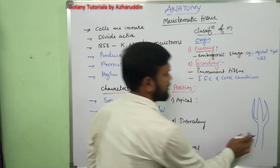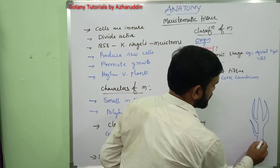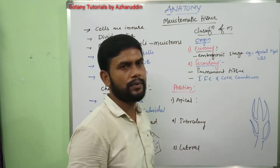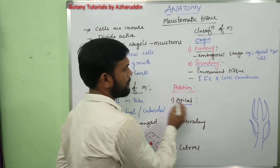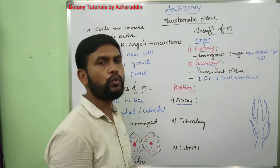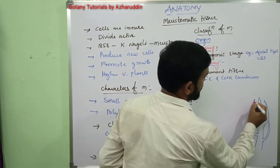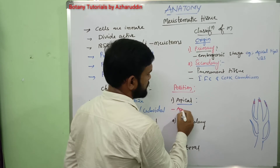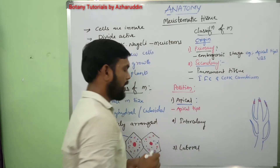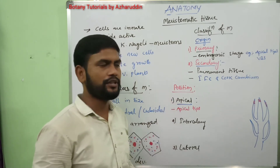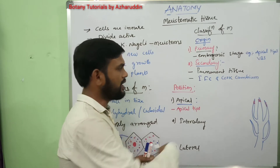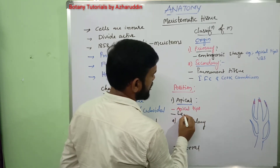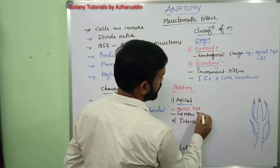In the primary plant body, lateral branches and apical tips are also present. Apical meristems are present at the root tips and shoot tips, including branches and stems. Their function is to increase the length of the plant body — that is, they help in the linear growth of the plant body.